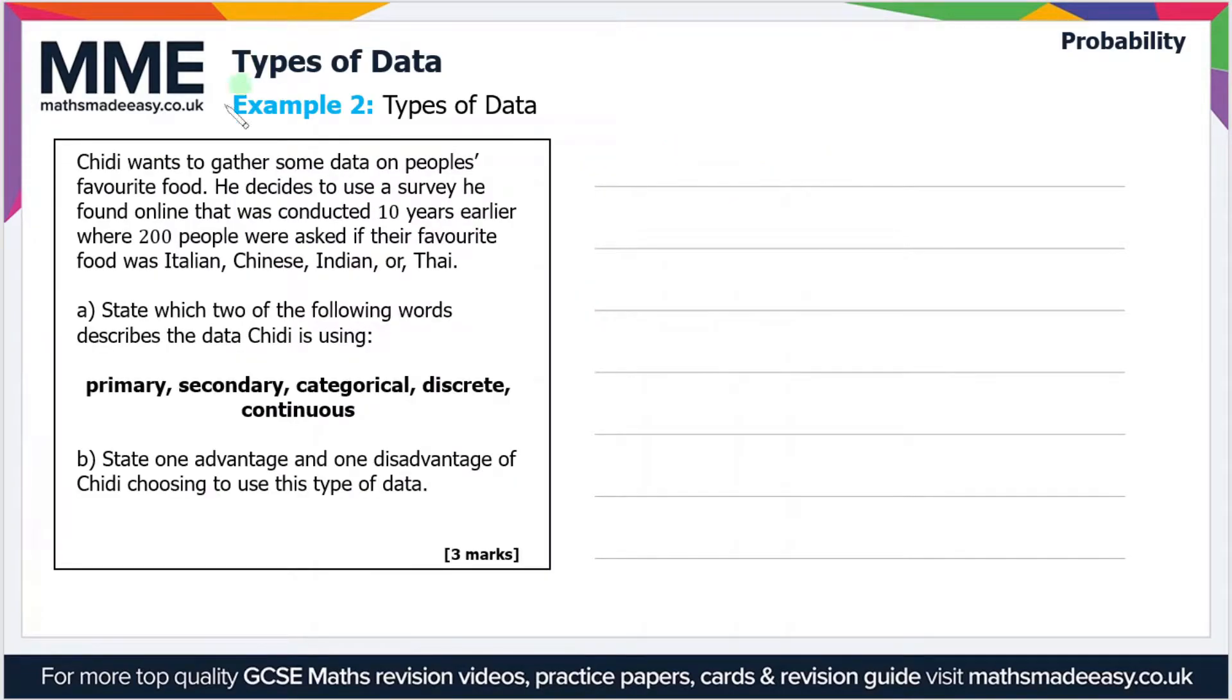So let's move on to the second example then. Chidi wants to gather some data on people's favorite food. He decides to use a survey he found online that was conducted 10 years earlier where 200 people were asked if their favorite food was Italian, Chinese, Indian, or Thai. State which two of the following words describe the data Chidi is using.